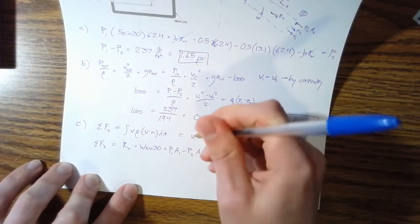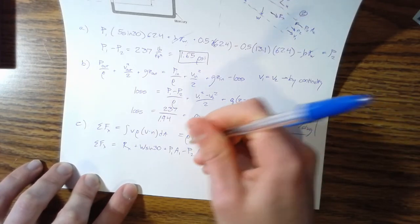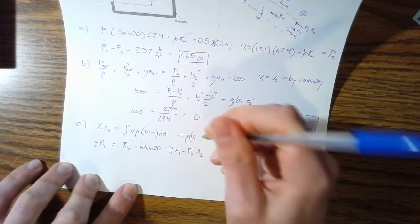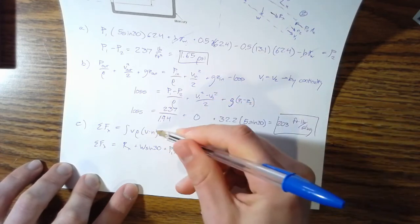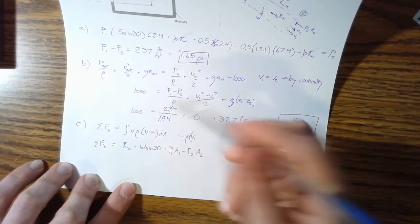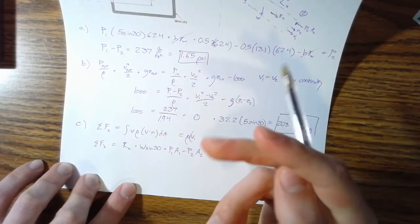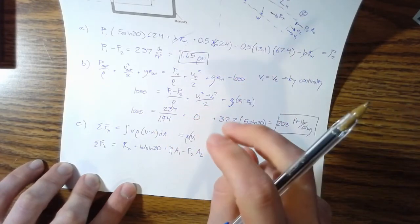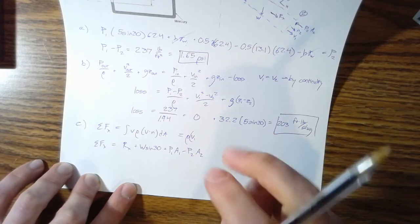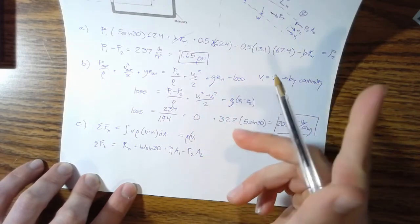Remember that for the dot product, you're just multiplying the, it's the multiple of the magnitude of the two vectors times the angle between them, the cosine of the angle between them. So for, oops, that's supposed to say two.